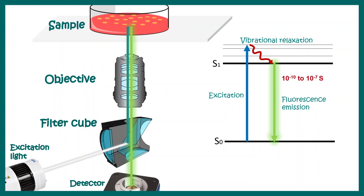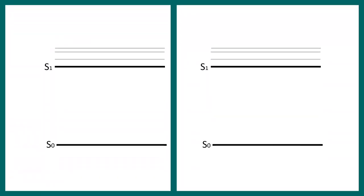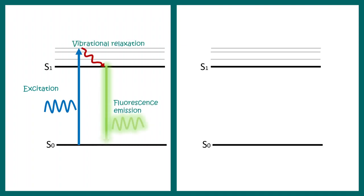Two photon microscopy is pretty much similar with some modifications. Before understanding two photon microscopy, we should analyze the name 'two photon.' Two photon is a kind of process. Here is a one photon process, normally understood by the Jablonski diagram. An excitation light allows the electron to jump from ground state to excitation state. There would be vibrational relaxation, ultimately leading to a radiative emission which we see as fluorescence — otherwise known as one photon fluorescence emission.